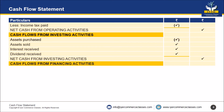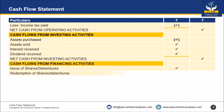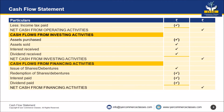And last, cash flows from financing activities, which includes issue of shares or debentures, redemption of shares or debentures, interest paid, and dividend paid. We get net cash from financing activities.